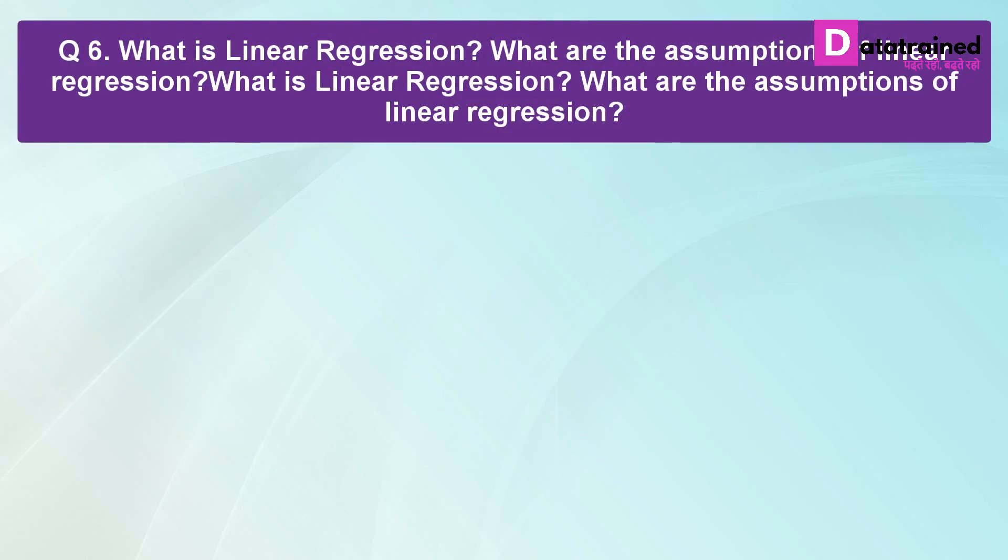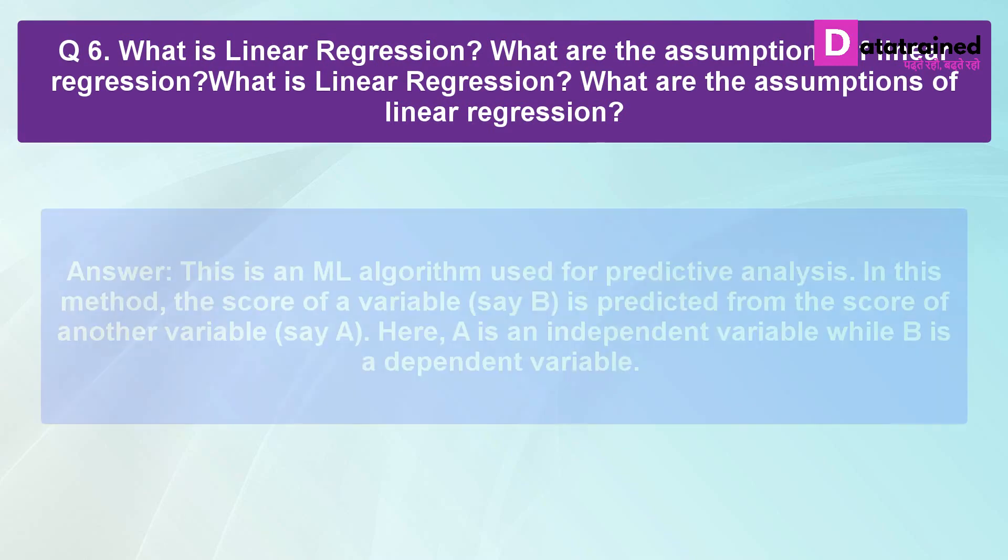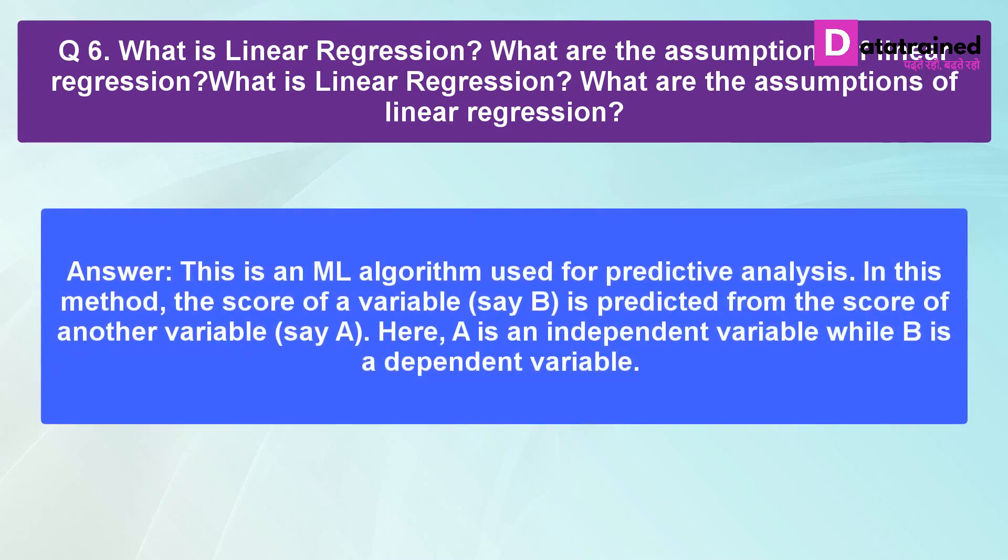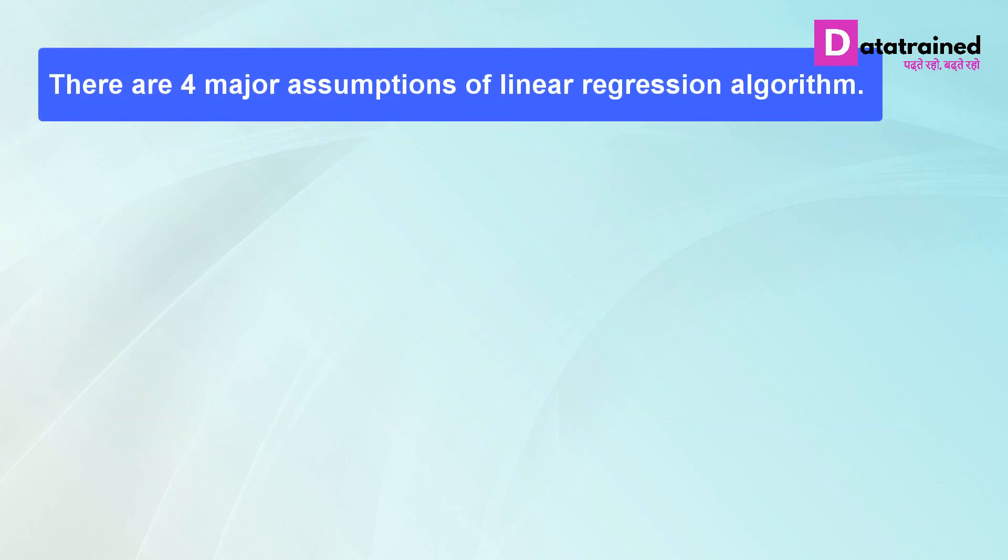What is linear regression? What are the assumptions of linear regression? This is an ML algorithm used for predictive analysis. In this method, the score of a variable say B is predicted from the score of another variable say A. Here A is an independent variable while B is a dependent variable. There are four major assumptions of linear regression algorithm.